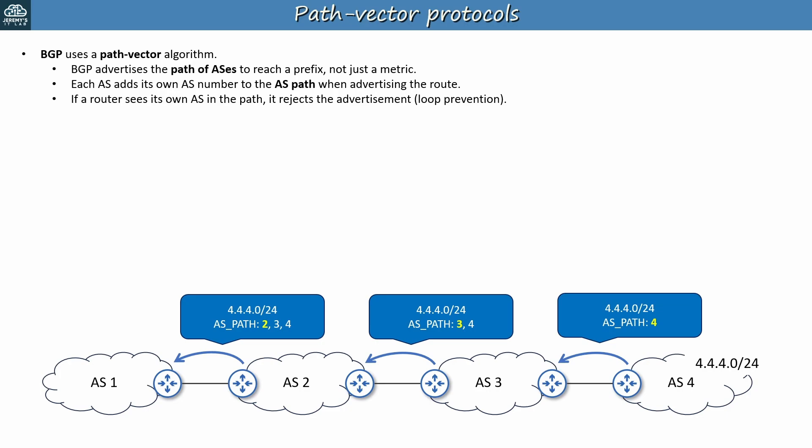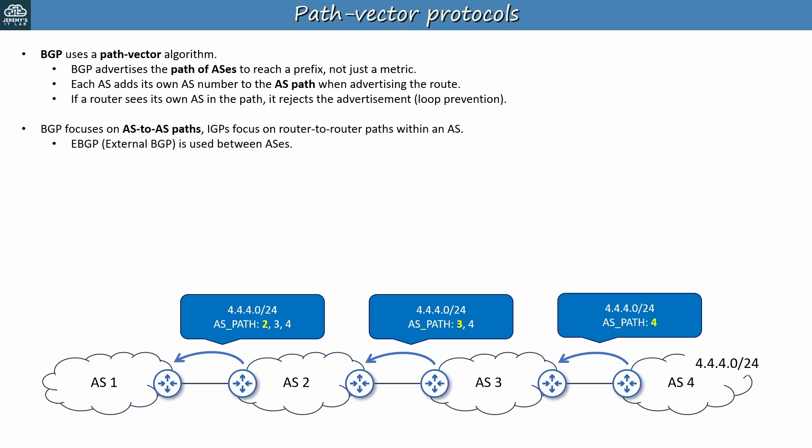The big difference between BGP and the IGPs is that BGP focuses on AS-to-AS paths, while IGPs focus on router-to-router paths within an AS. There are actually two types of BGP: EBGP is used between ASs, and IBGP, internal BGP, is used to share external routes within an AS. Even though IBGP is used inside an AS, it's still BGP — not an IGP like OSPF or EIGRP. The NCORE exam focuses on eBGP, but I will mention IBGP in the BGP section of this course.